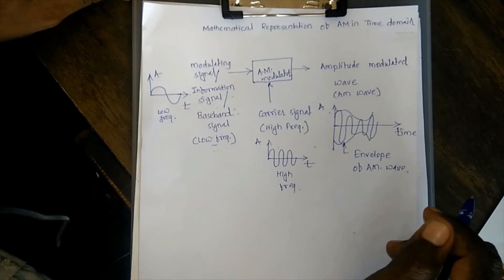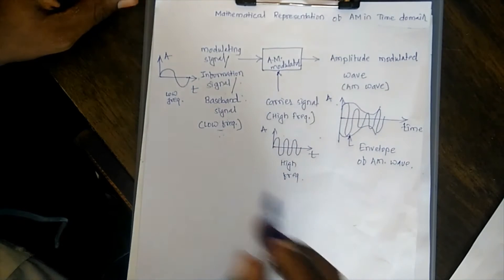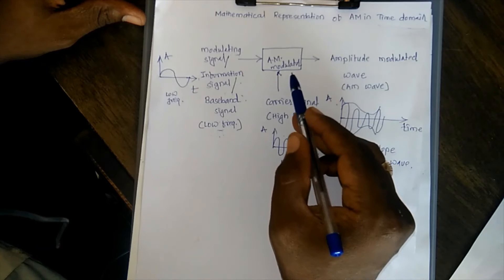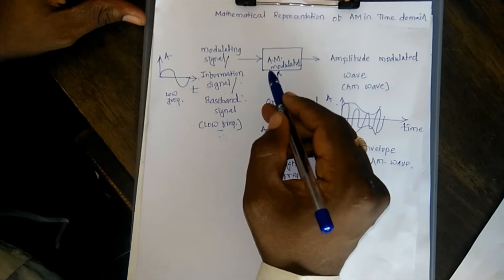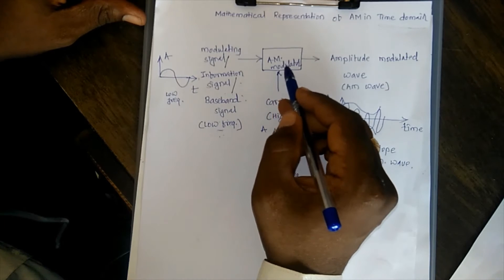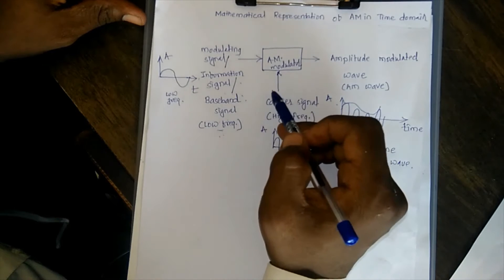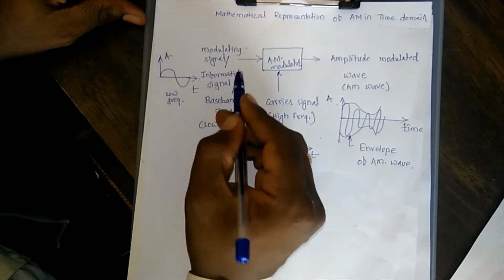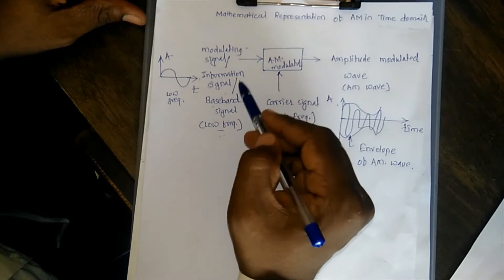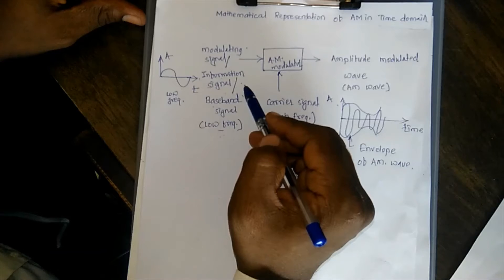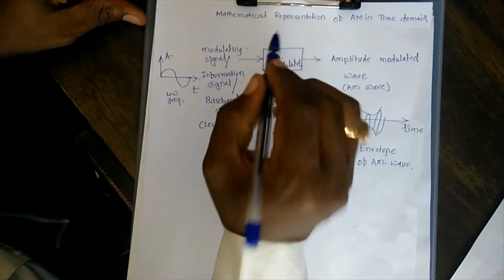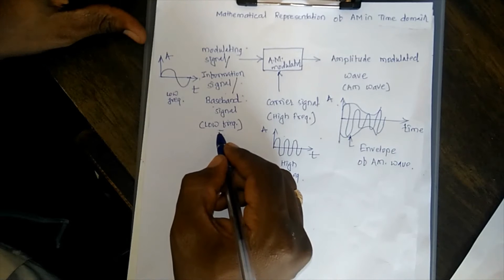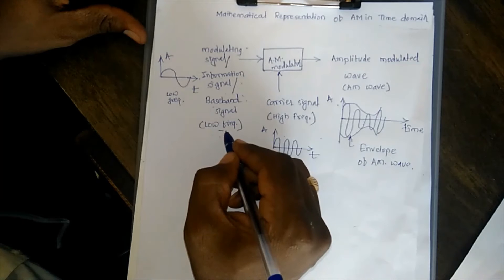Before going further, let us have a look over the amplitude modulation process. As all of you know, the modulator is always placed at the transmitter. For doing amplitude modulation, the amplitude modulator needs two different signals. First one is the modulating signal, that is also our information signal. We may also call it as a baseband signal — the information which we want to transmit for a longer distance. The modulating signal is always a low frequency signal.